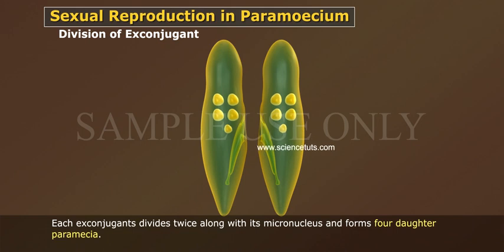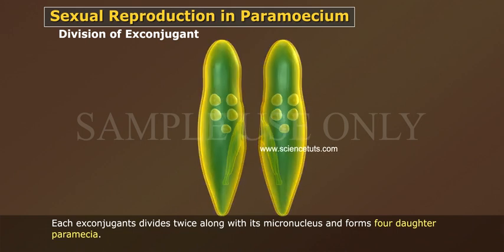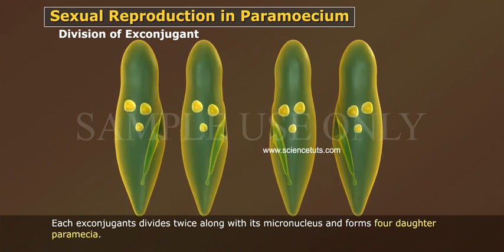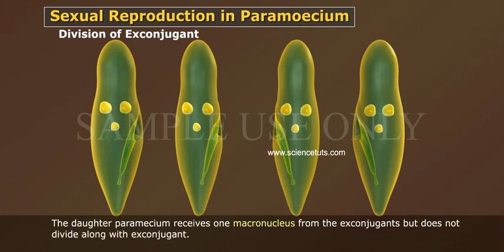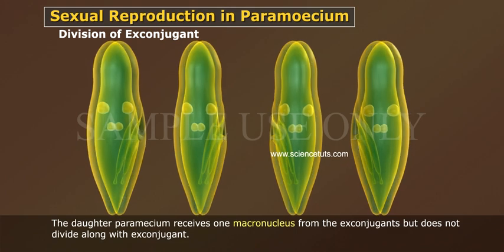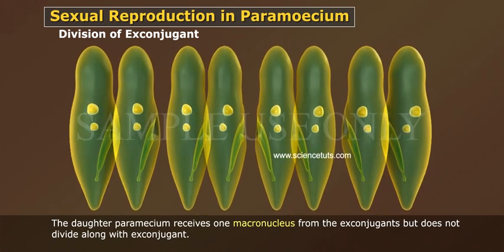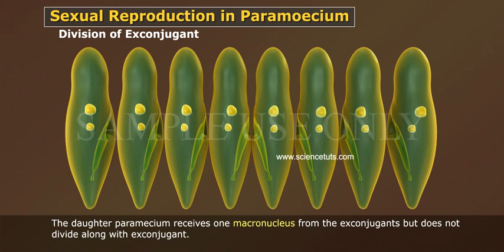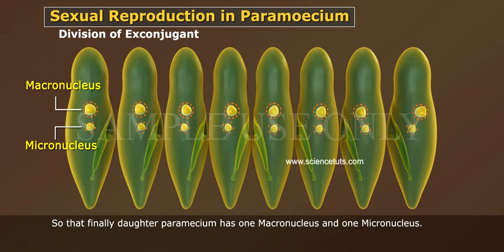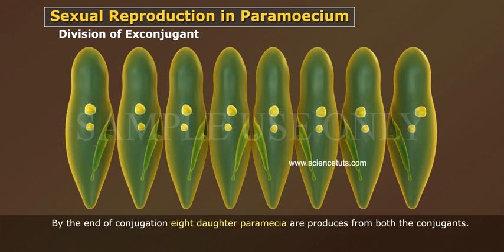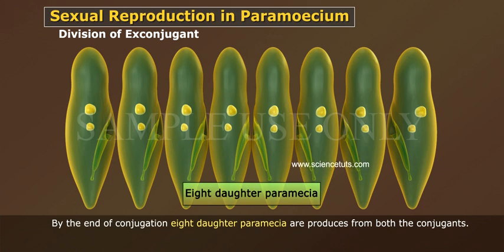Each ex-conjugant divides twice along with its micronucleus and forms four daughter paramecia. The daughter paramecia receive one macronucleus from the ex-conjugant, but the macronucleus does not divide along with the ex-conjugant, so that finally each daughter paramecium has one macronucleus and one micronucleus. By the end of conjugation, eight daughter paramecia are produced from both conjugants.